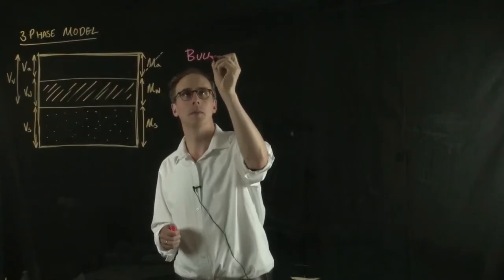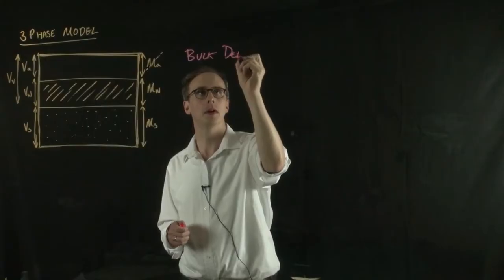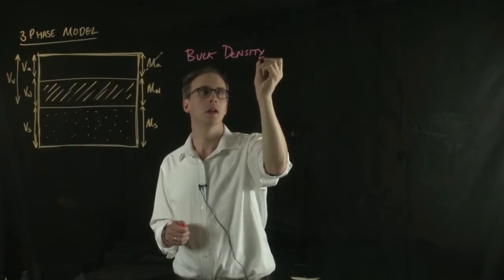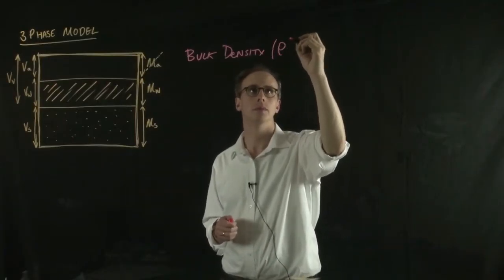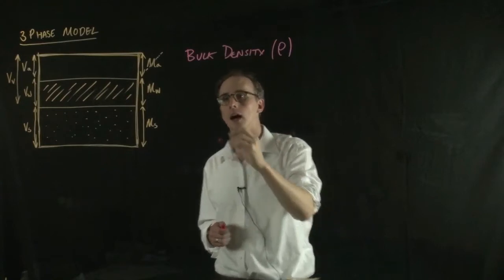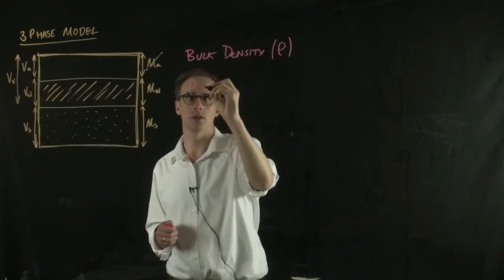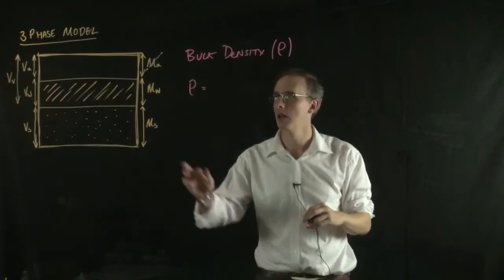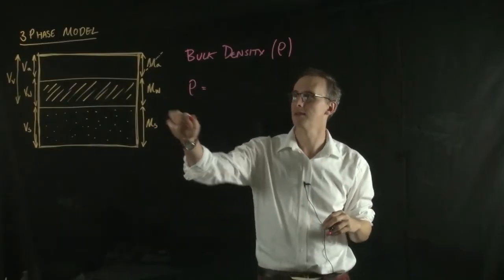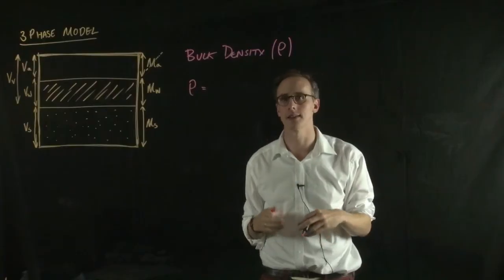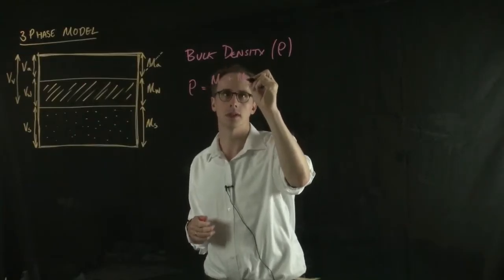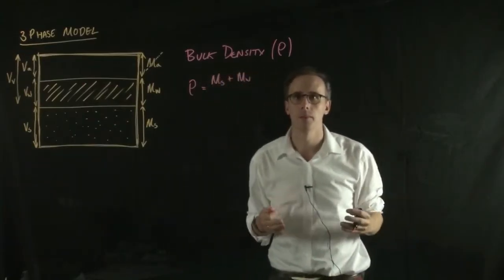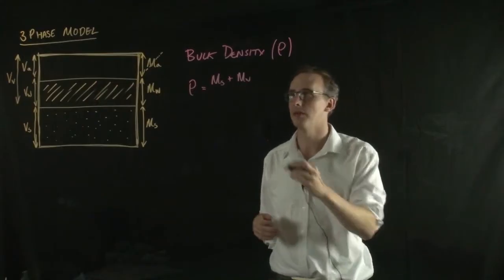Bulk density is often given the symbol rho, and that is equal to the total mass of the soil, so the mass of the solid plus the mass of the water. Remember the mass of air is zero, so the mass of the solid plus the mass of water, then divide that by the total volume of the soil.